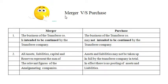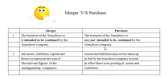Let us see the difference between merger and purchase. The first point of difference: in merger, the business of the transferor company — that is, the old existing company — is intended to be continued by the transferee company or a new company. Whereas in purchase, the business of the transferor company may not be intended to be continued by the transferee company.